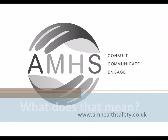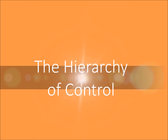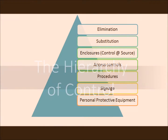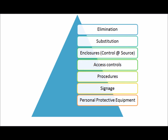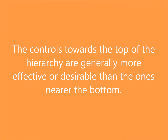What does that mean? The hierarchy of control. When we want to reduce risk, there is a hierarchy of control to choose from. Hierarchy means an order of preference or ranking. The controls at the top are generally more desirable than the ones at the bottom.